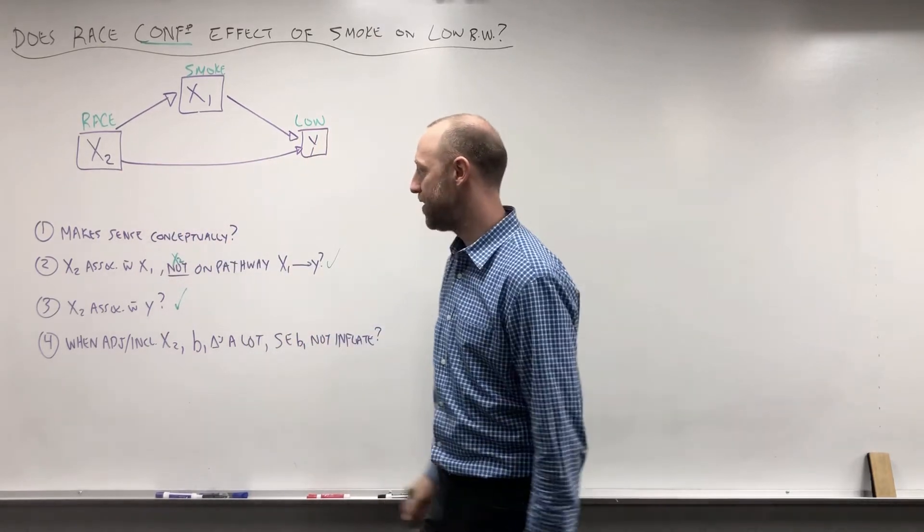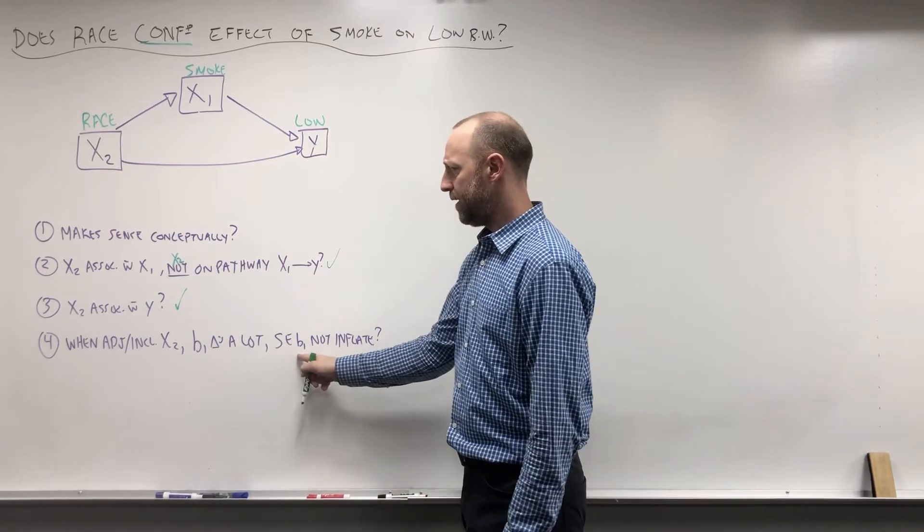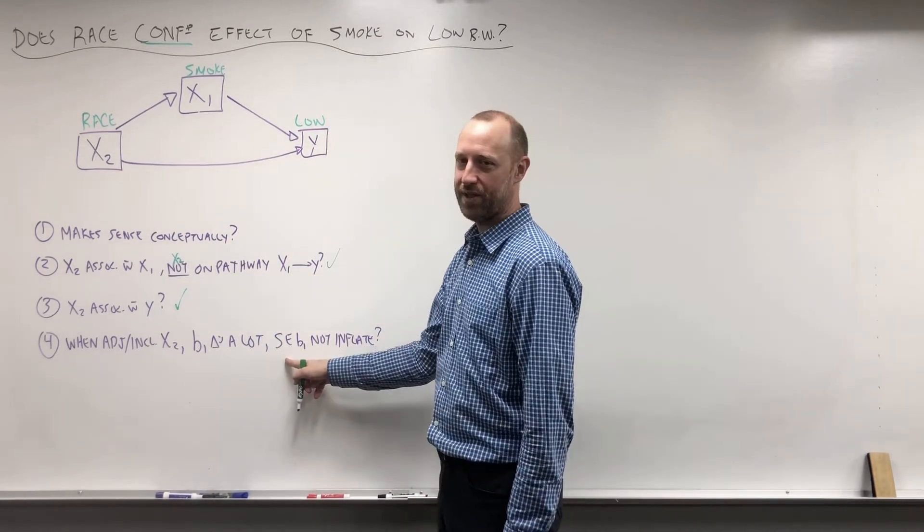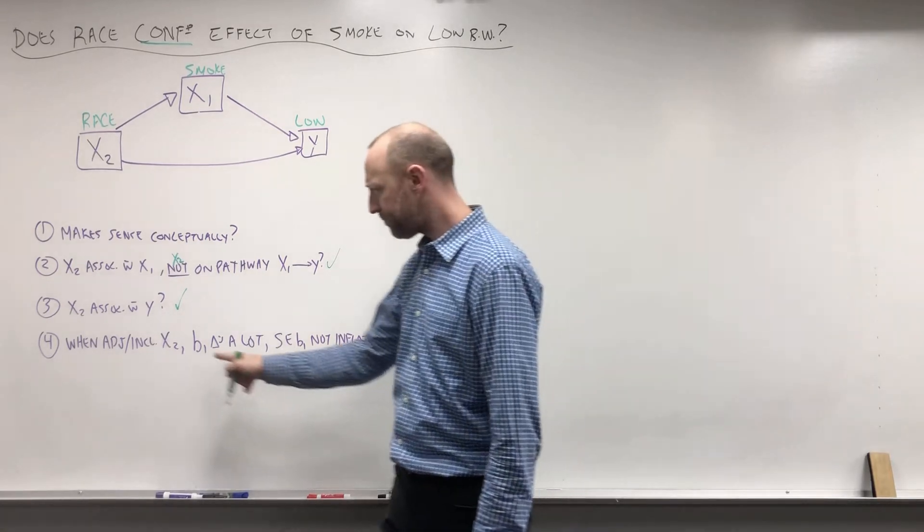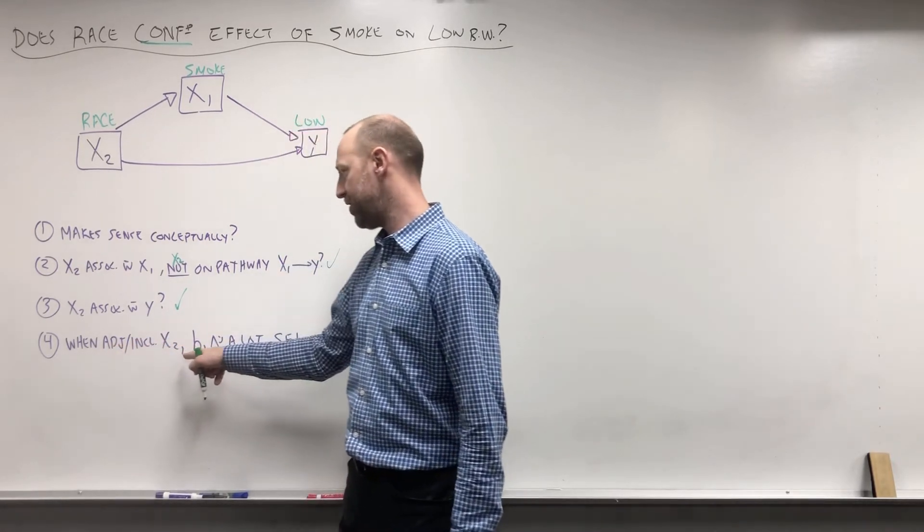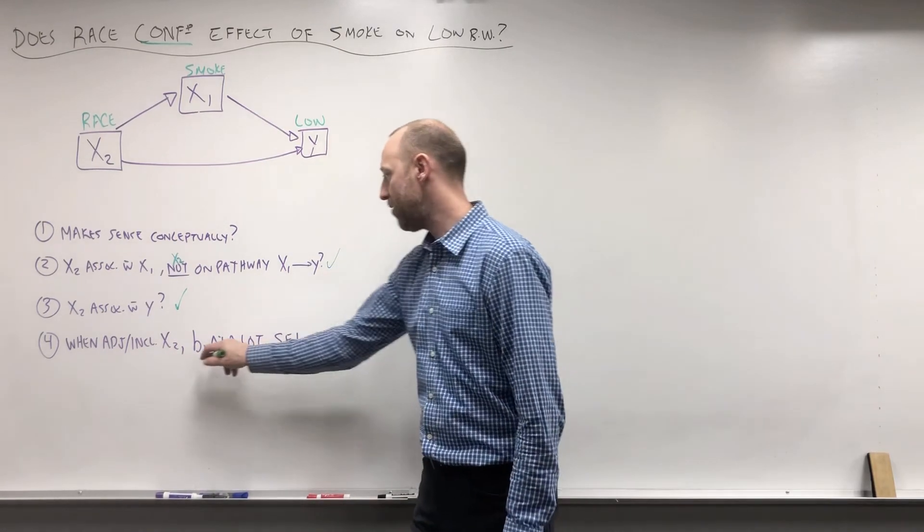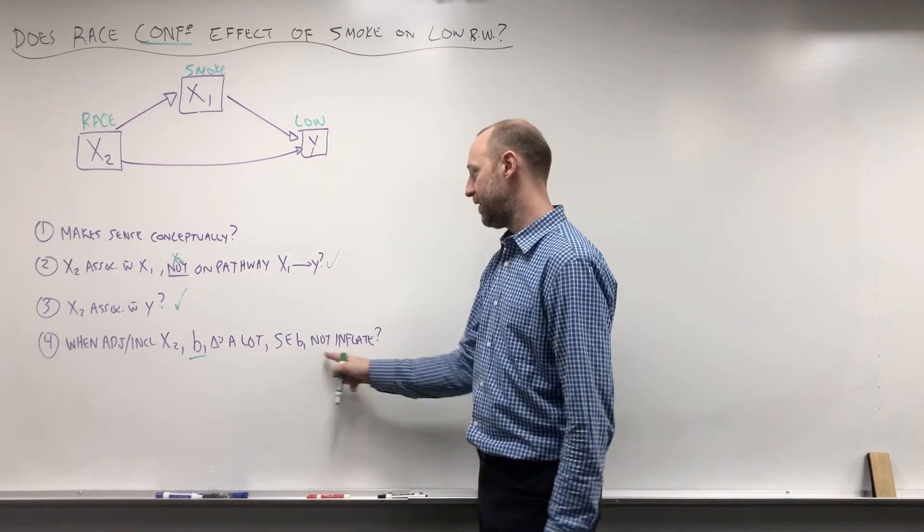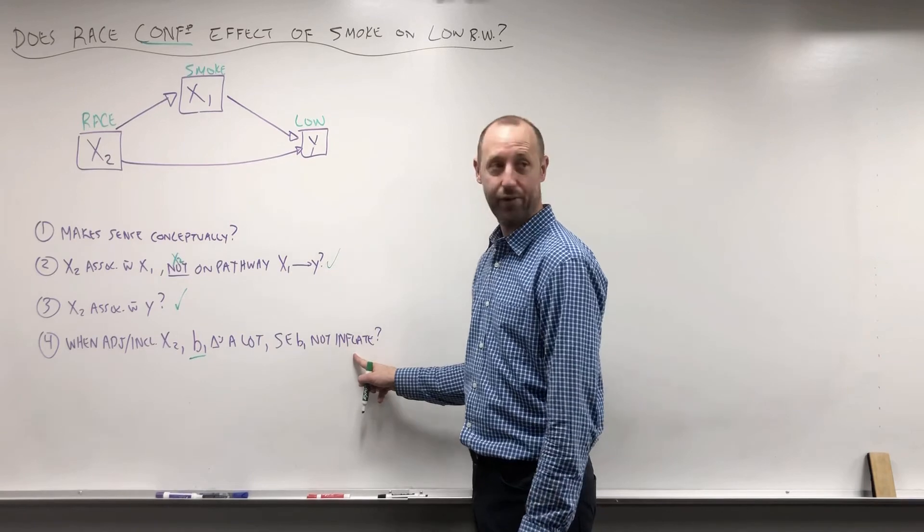Is there an association between race and low birth weight? And then finally, we can't do this one conceptually here, but we'll look at in R: when we adjust for X2, when we include it in the model, how does b1 change? Does it change a lot, and does the standard error not increase by a lot?